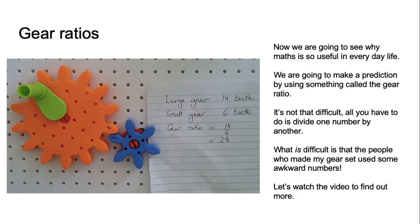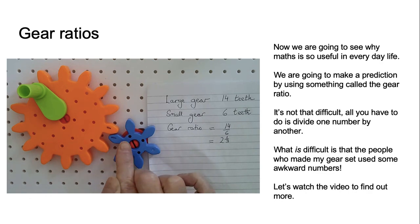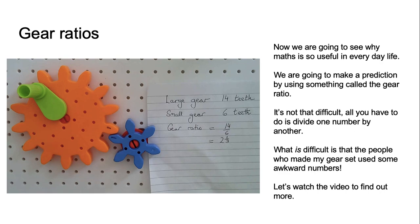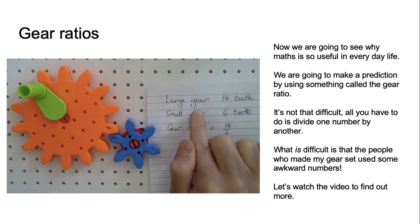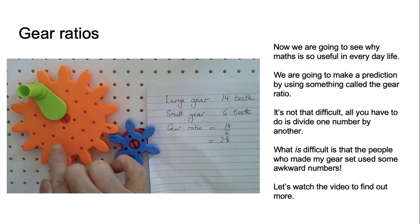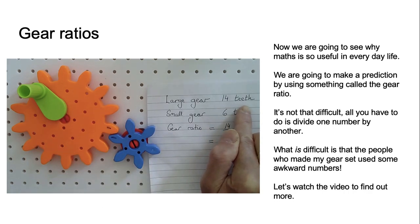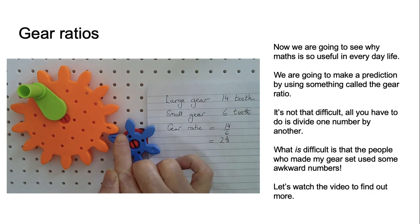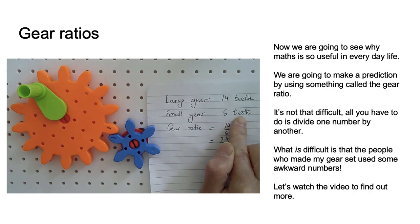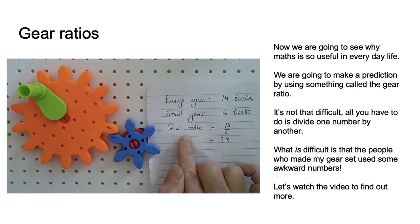We saw in a previous video clip that if we've got a big cog or gear and use it to turn a smaller cog or gear, the smaller one is going to turn faster — more times for each time the big cog goes around once. This time we're going to do a challenge to see if we can predict how many times it will go around. I've counted that on the large gear, the orange one, it has 14 teeth. The smaller gear, the blue one, has 6. We work out something called the gear ratio — a word which just means comparing the size of one number with another.